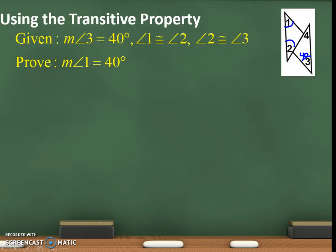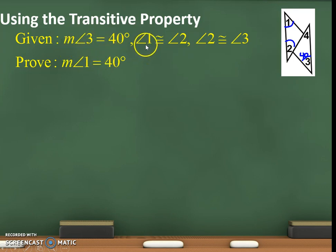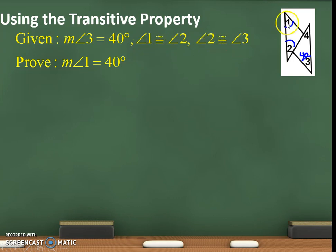Using the transitive property. Given: measurement of angle 3 is 40, angle 1 and angle 2 are congruent, and angle 2 and 3 are congruent — so 1 and 2 are congruent, 2 and 3 are congruent. Prove: angle 1 is 40.